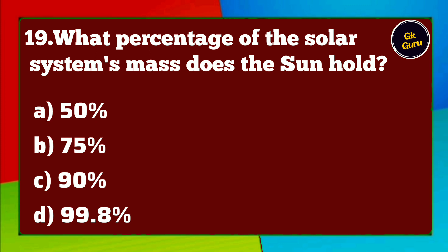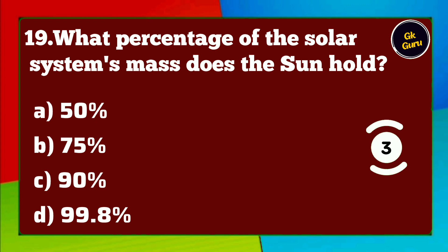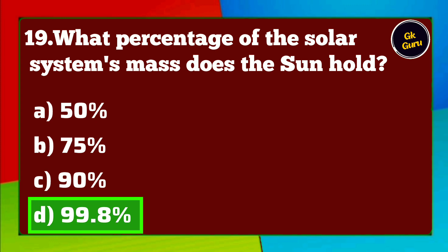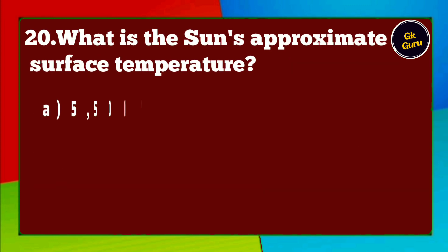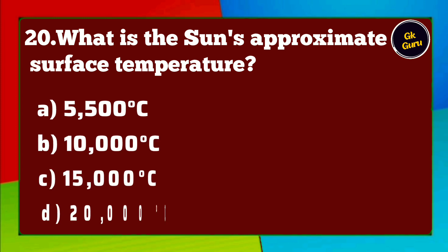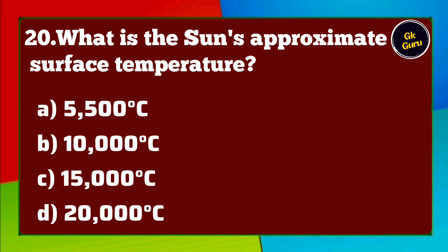What percentage of the solar system's mass does the sun hold? A. 50% B. 75% C. 90% D. 99.8%. Answer D. 99.8%.